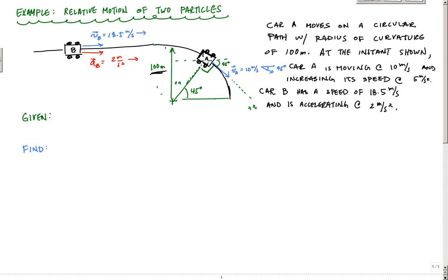The acceleration of A — the tangential component — is equal to 5 meters per second squared, also at an angle of 45 degrees relative to the horizontal. So that car is increasing at 5 meters per second squared. Car B is moving on a straight path at 18.5 meters per second and is accelerating at 2 meters per second squared. Your instructor will tell you to make sure you have the given and find statements so you know what you're looking for.